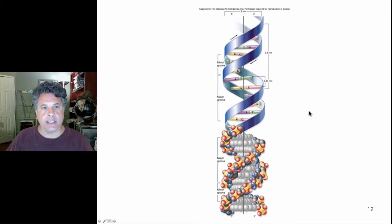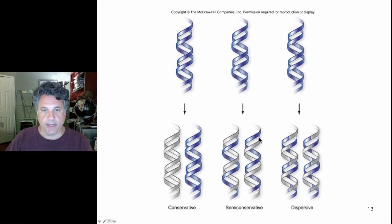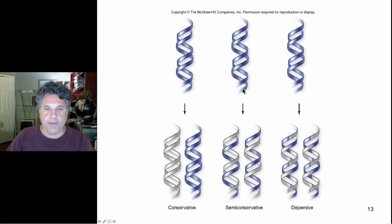Watson and Crick, in their paper which described the structure of DNA, immediately recognized that the molecule provides a means for its accurate reproduction — taking a parental molecule and producing two daughter molecules, which would be the requirement of the genetic material. And that replication process could be described as semi-conservative, given the complementarity of the bases in opposite strands of a double helix.